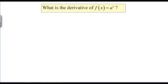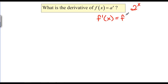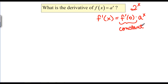Now that we have the derivative of natural log, we can find the derivative of A to the X for some constant A — this is something like the function 2 to the X. We looked at this problem earlier in the course, and we were able to discover, using the definition of a derivative, that F prime of X has got to be F prime of 0 times A to the X. We just don't know what this constant should be, so let's see if we can figure it out.